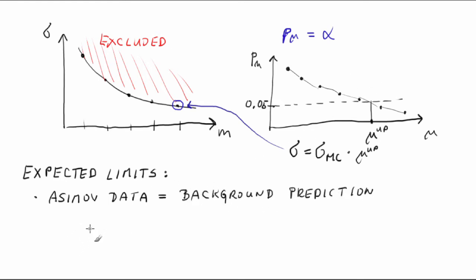For example, the expected upper limit on the signal strength is determined by solving the following equation for mu. The median of p-value, the median of p-sub-mu given the hypothesis of mu equal to 0, is approximately equal to 1 minus phi of the square root of q-sub-mu a and this is equal to 0.05.